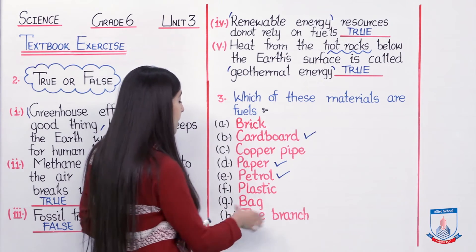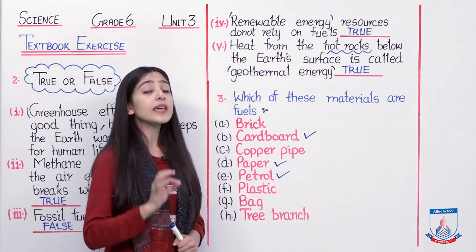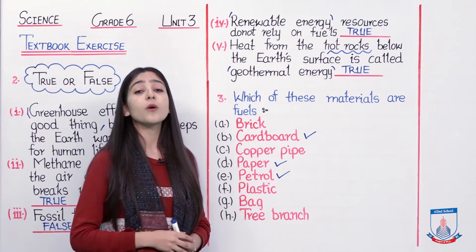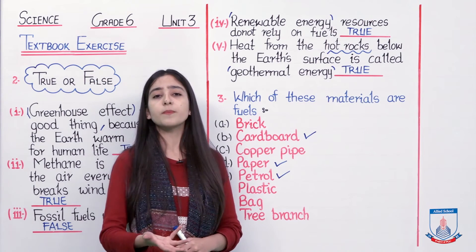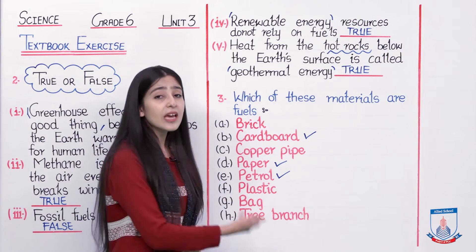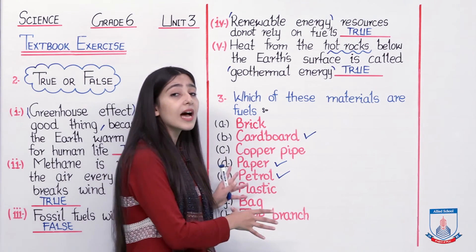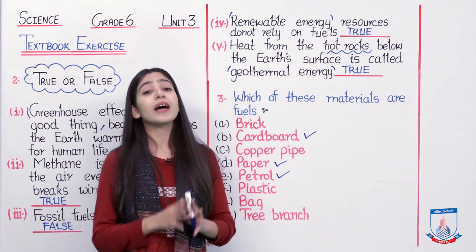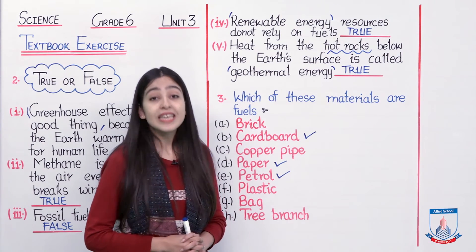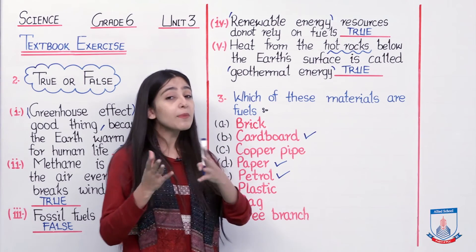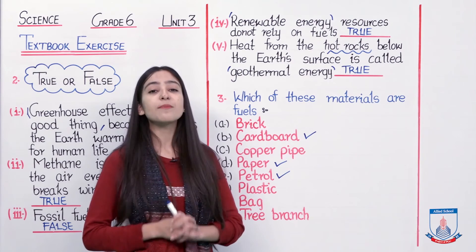After that we have plastic. Plastic needs to be reduced by us and all industries. Why? Because plastic cannot be used as fuel. It can be recycled and used to make new things, but it will not be used as a fuel. Then we have a bag. Can you use your school bag as a fuel or energy source? No, students — that is not possible.